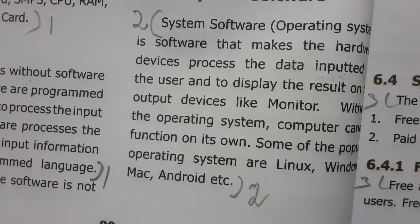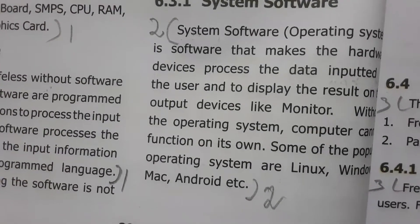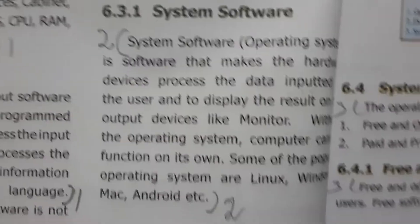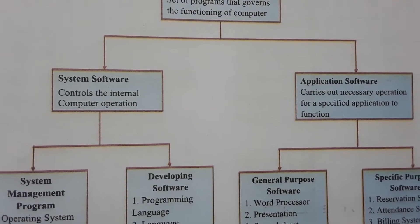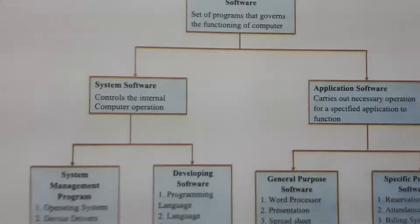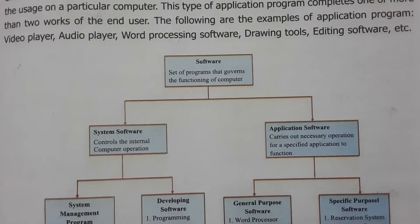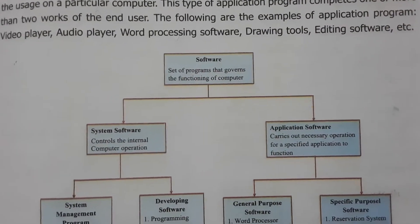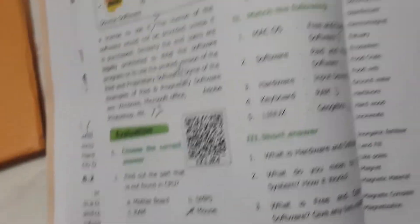There are types of software: operating system and application software. System software is software that makes the hardware device process the data inputted by the users and display the result on the output device. Some application software are free and open source type, and some are paid and proprietary software type.